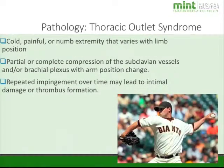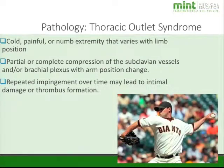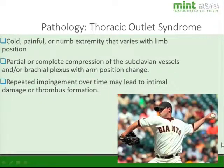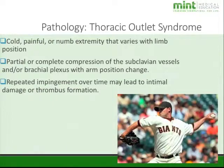Another popular upper extremity test is for thoracic outlet syndrome. Generally this patient would have a cold, painful, or numb extremity. There can be partial or complete compression of the subclavian vessels or brachial plexus with arm position changes. One notable example is Noah Lowry, a pitcher for the Giants whose career ended because of thoracic outlet syndrome — repeated impingement over time can lead to intimal damage or thrombus formation.